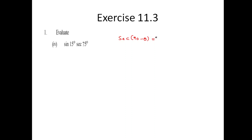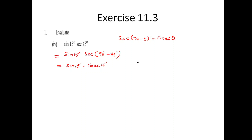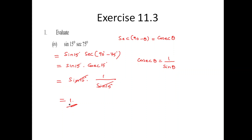Using the identity sec(90 minus theta) equal to cosec theta, I can write this as sin 15 into sec(90 minus 75) degrees directly. The resultant comes out to be sin 15 into cosec 15. The relationship between cosecant and sine is cosec theta equals 1 by sin theta. So I can write this as sin 15 into 1 by sin 15, this cancels out, and the answer is 1.